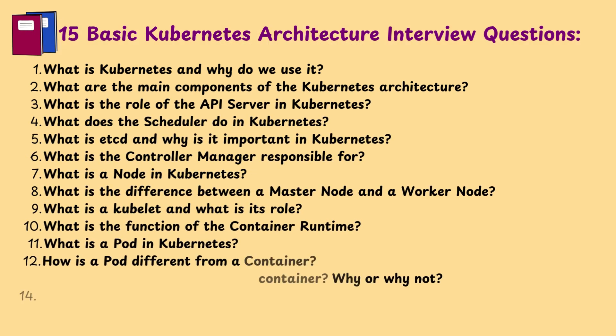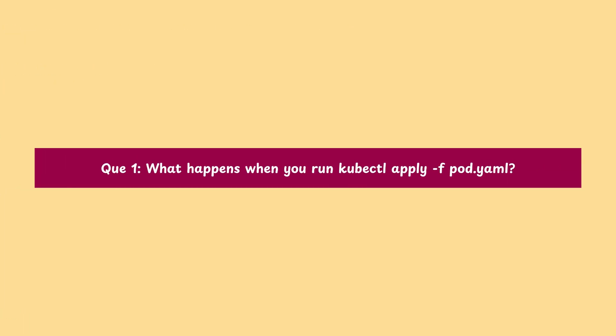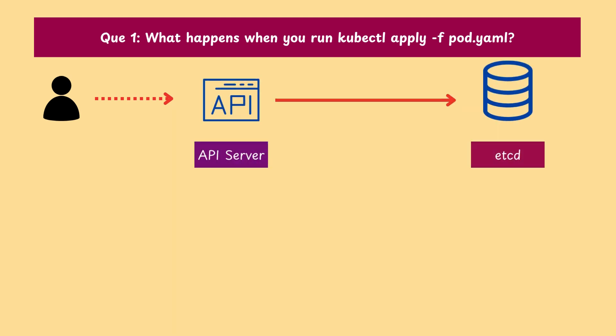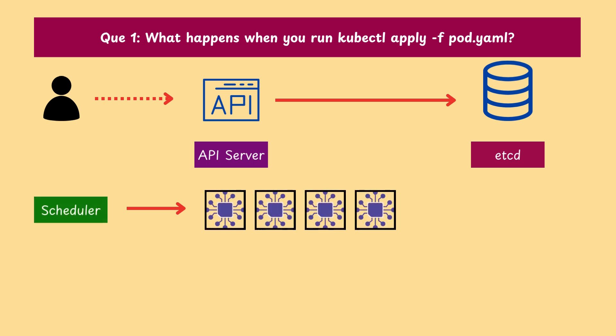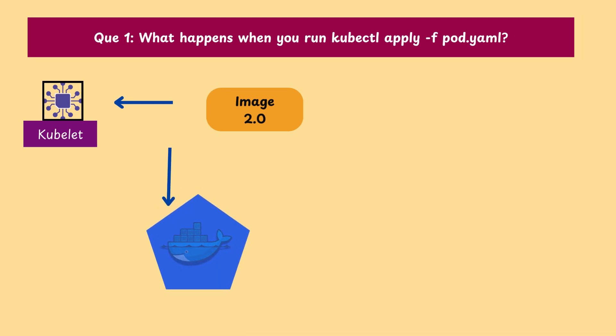Now let's jump into the top 15 real-time interview questions on Kubernetes architecture. Question 1: What happens when you run kubectl apply -f pod.yaml? The request goes to the API server, which stores it in etcd. The scheduler chooses the best node, and then the kubelet on that node pulls the image and starts the container inside a pod.